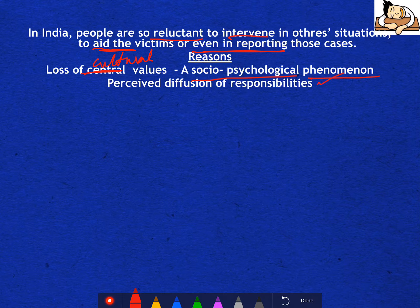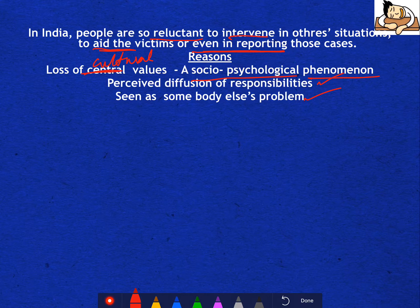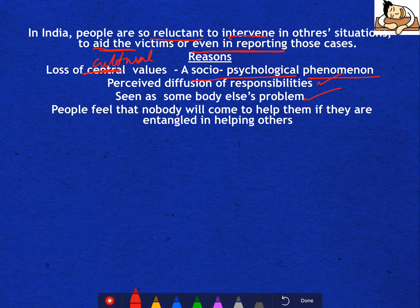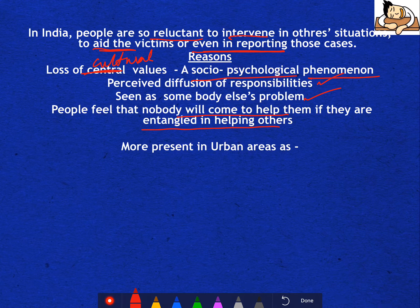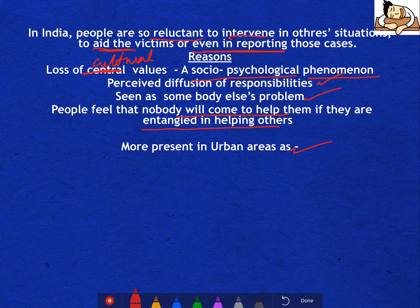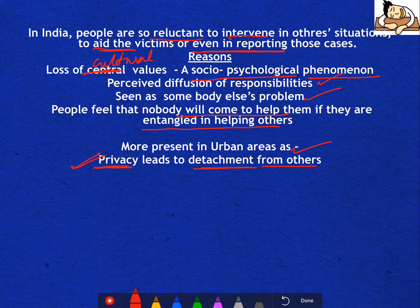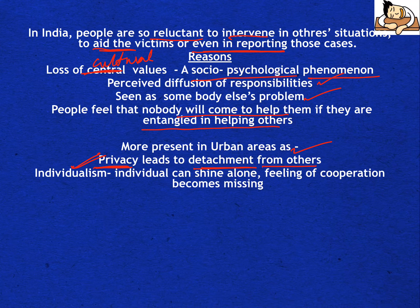The most important factor is perceived diffusion of responsibility. People feel that nobody will come to help them if they are themselves entangled in helping others and face a similar situation another day. Bystander apathy is more prevalent in urban areas because in urban areas, privacy leads to detachment from others, and individualism means people think they can shine alone, they do not need anyone. So the feeling of cooperation is not there, and they think helping others is not their problem.